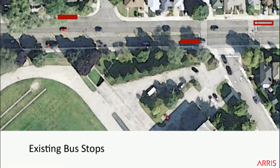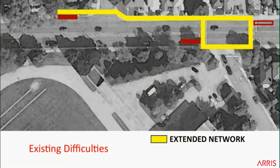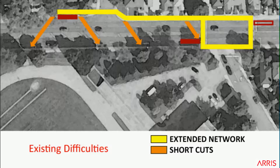We see a pedestrian circulation network on the north side of the street, and again the square where the intersection is. The orange arrows indicate the shortcuts students take across the street, and there have been several incidents involving personal injury accidents.